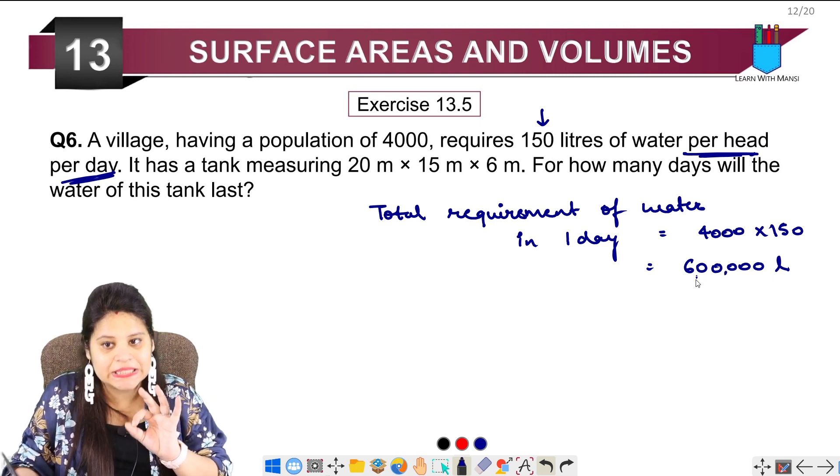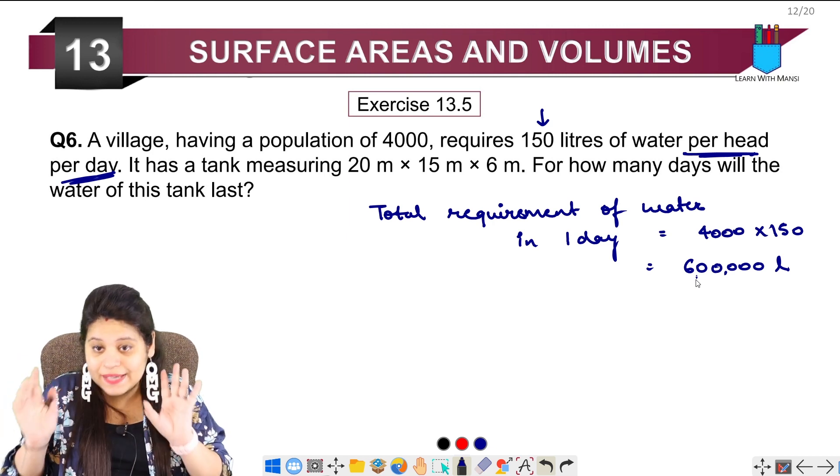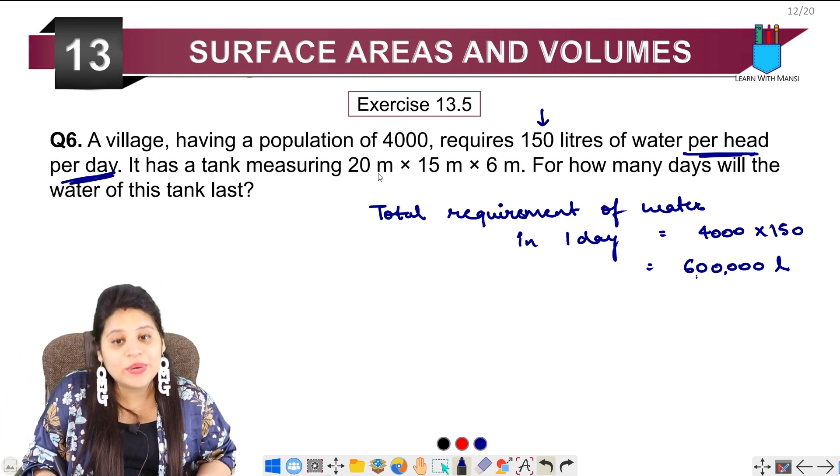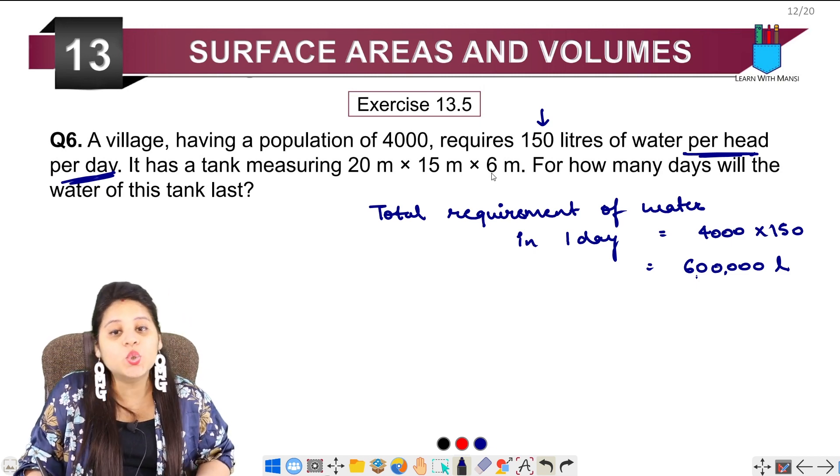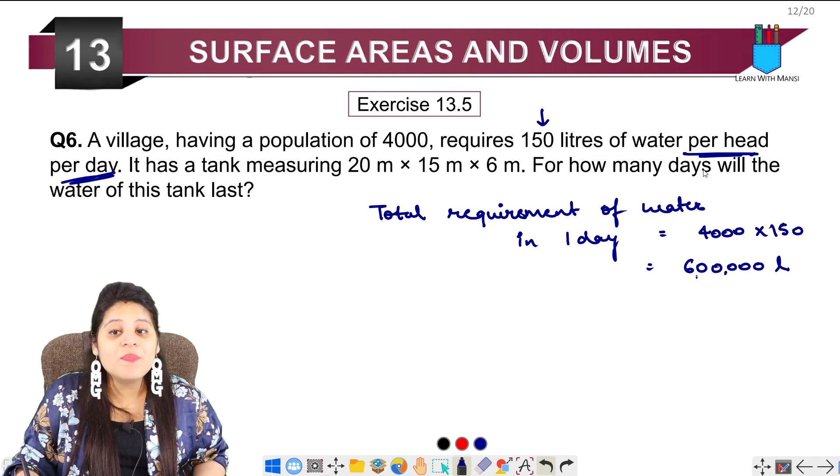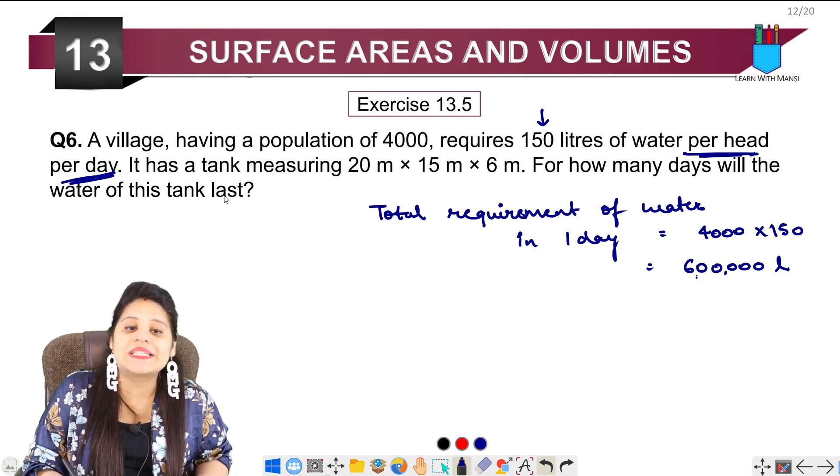6 lakhs. We need 6 lakh liters of water for one day. Now it asks if it has a tank measuring 20 meters into 15 meters into 6 meters. Now we have given the dimensions of the tank. For how many days will the water of this tank last?